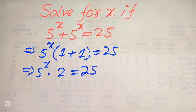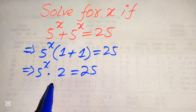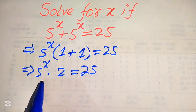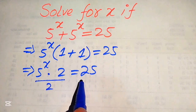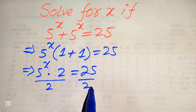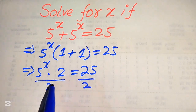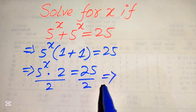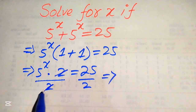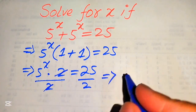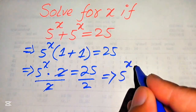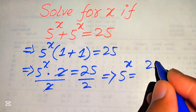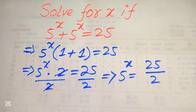Because we solve this problem for the values of x, we need to eliminate 2 from the left hand side. For this, we divide both sides by 2. After division by 2, this 2 is cancelled out and we get 5 to the power of x is equals to 25 over 2.